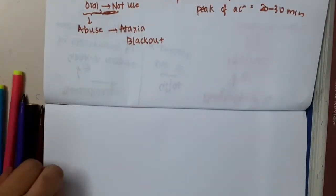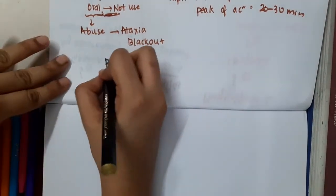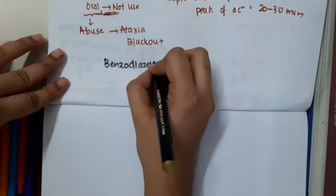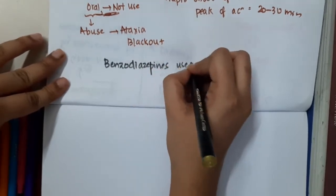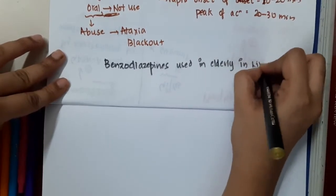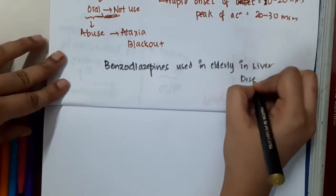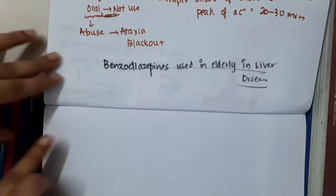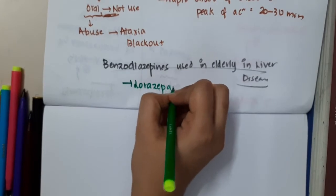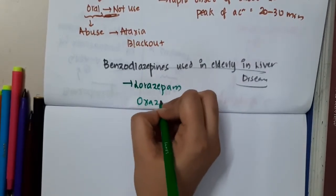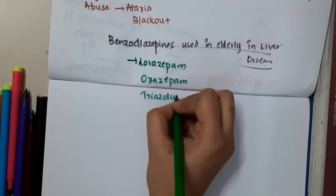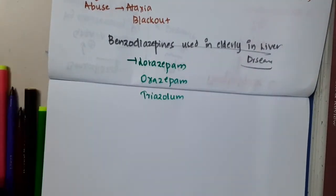If a question was asked: which benzodiazepine is used in elderly patients and in liver disease? We can use lorazepam, oxazepam, and triazolam. These three benzodiazepines can be used in elderly patients and in liver disease.